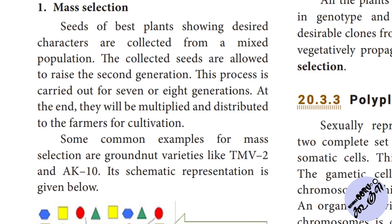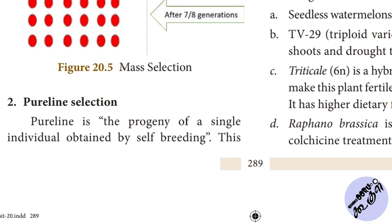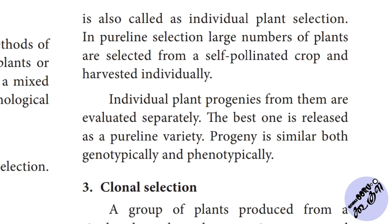That is pure line selection. Pure line is the progeny of a single individual obtained by self-breeding. This is also called individual plant selection. If you select one plant, that is the best plant — this is called pure line selection.